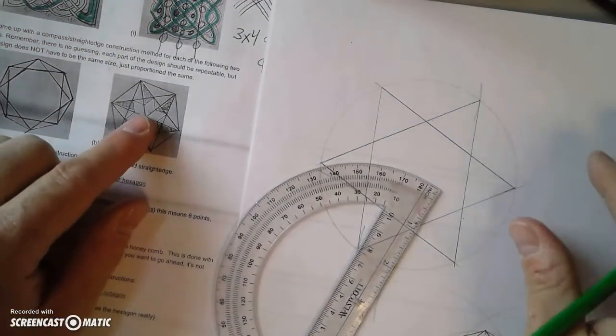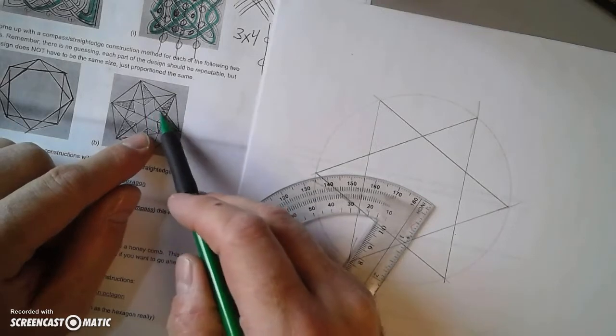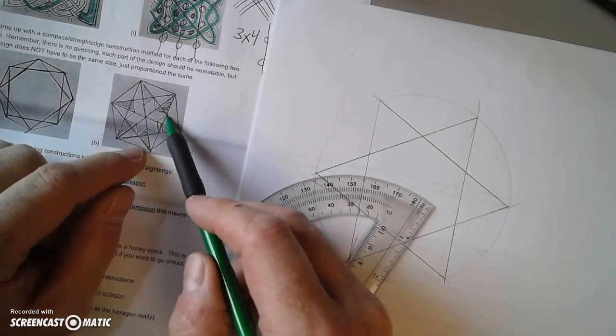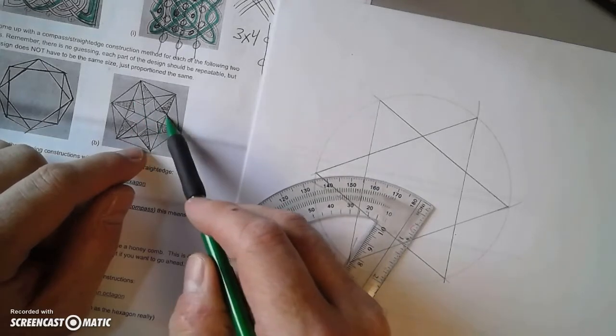Alright, so now I have a star. Now in the picture here, this star kind of extends outward, but that's also because there's a six-pointed star. How is this six-pointed star constructed?